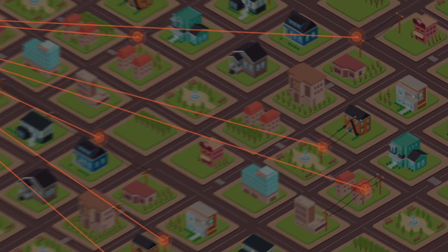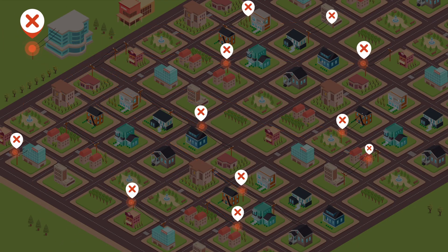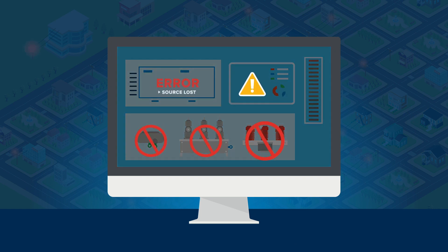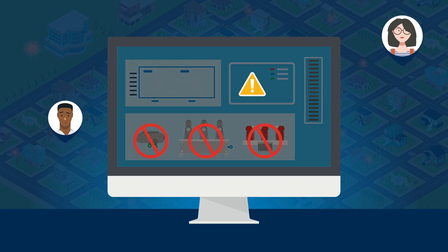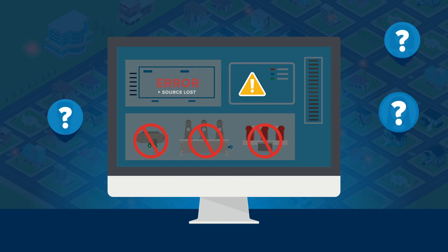What's more, if the base node goes down, so does the whole network, leaving the command center in the dark with no visibility into how the grid is operating, and without the communications needed for grid optimization processes.